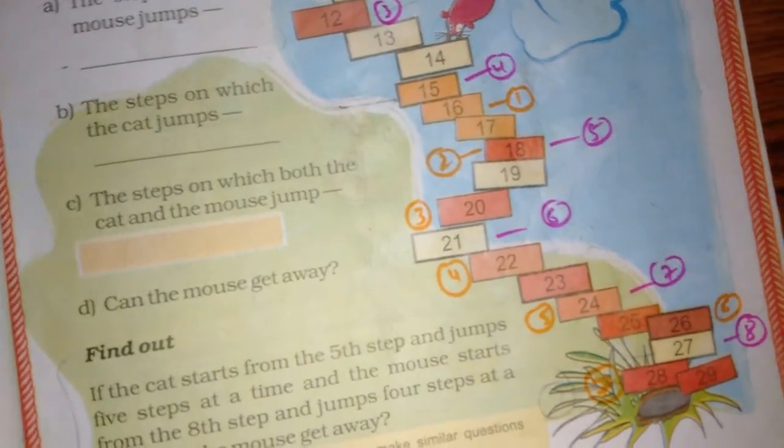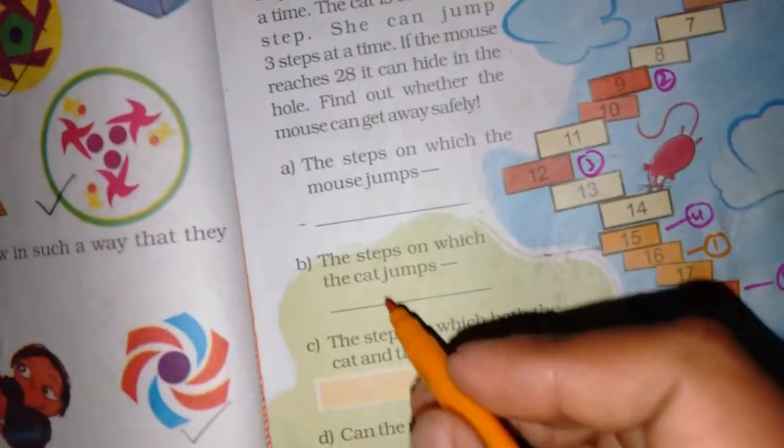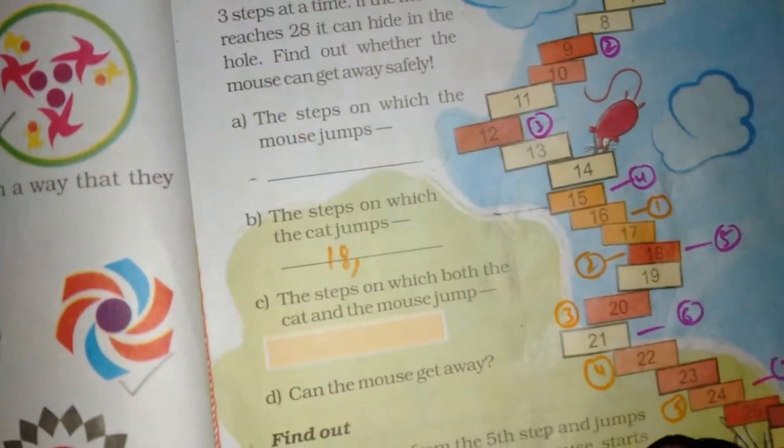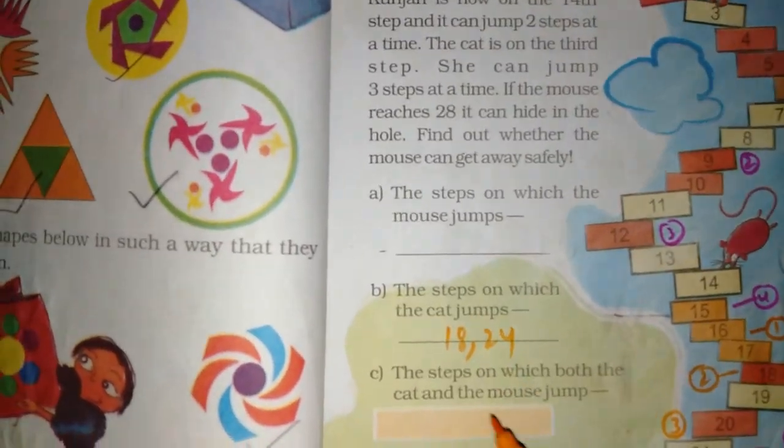24. The steps on which both the cat and mouse jumps. Okay, this is going to go down.